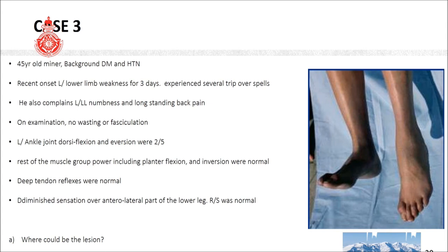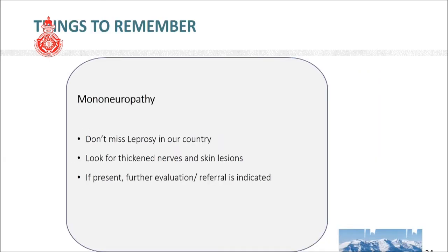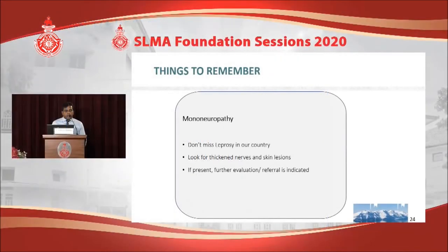This is a clinical difference between an L5 root problem and a common peroneal nerve problem: in common peroneal nerve palsy, foot inversion is not affected, in contrast to an L5 root problem where inversion is affected. That clinical detail allows you to differentiate L5 root from common peroneal nerve. An important thing to remember when dealing with single nerve problems — whether common peroneal nerve, ulnar nerve, or any other — is do not miss leprosy, especially in our country. Look for thickened nerves and hypopigmented skin lesions.